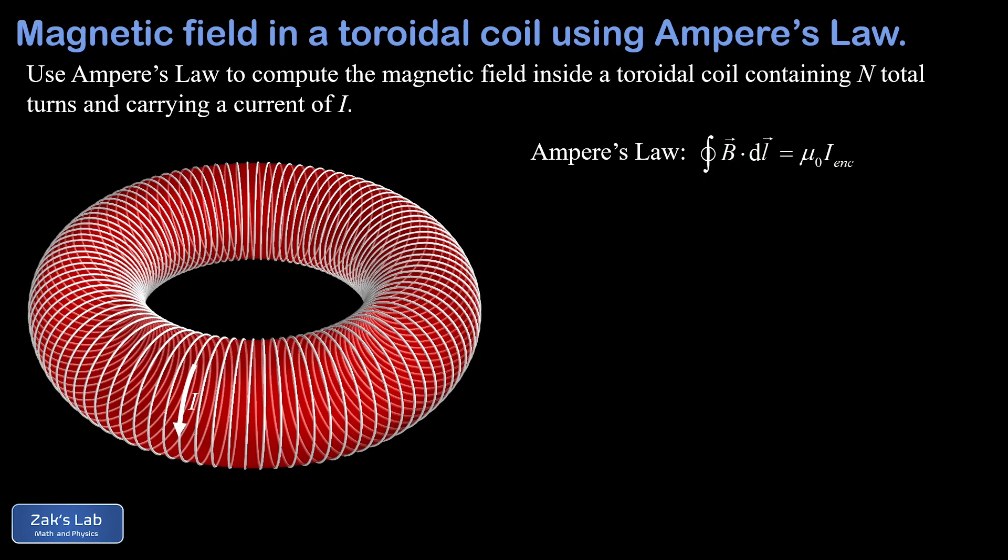To calculate this magnetic field we're going to use Ampere's Law. We have a reminder of Ampere's Law over here on the right, which says the path integral of magnetic field along a closed loop is equal to μ₀ times the current enclosed by that loop - in other words, the amount of current penetrating the surface defined by the loop.